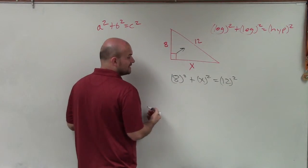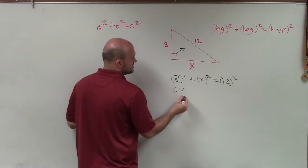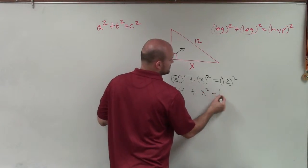All right, so now I just go ahead and simplify. So 8 squared is 64 plus x squared equals 144.